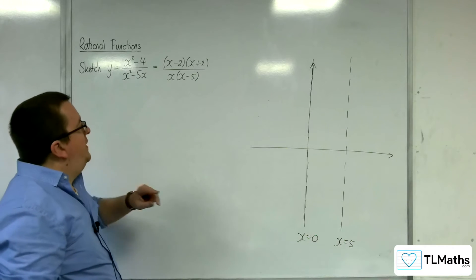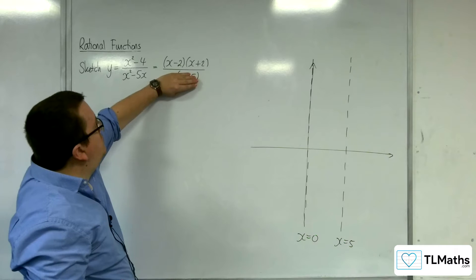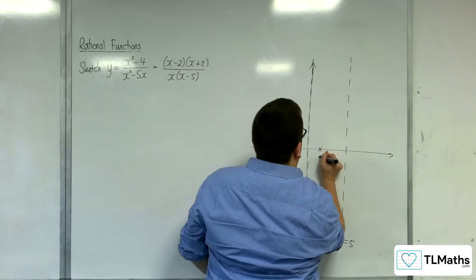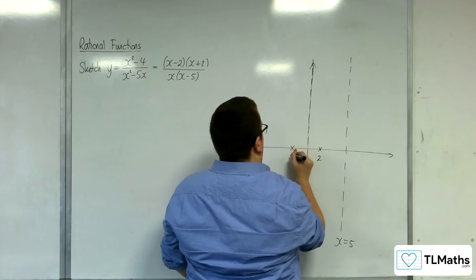How about where it crosses the x-axis? Well, that's when y is 0, when the numerator is 0, so that's at 2 and minus 2. So at 2 and minus 2.